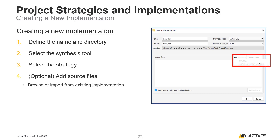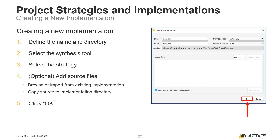To add source files, select the Add Source button. Users have two options: source files from an existing implementation can be copied using the From Existing Implementation option, or users can click the Browser option to manually select files. One important thing to remember is to select the Copy Source to Implementation Directory checkbox — this copies all source files to the new implementation's directory. If this option is not checked, the implementation will reference files from their original source location. Finally, click OK to generate the new implementation.